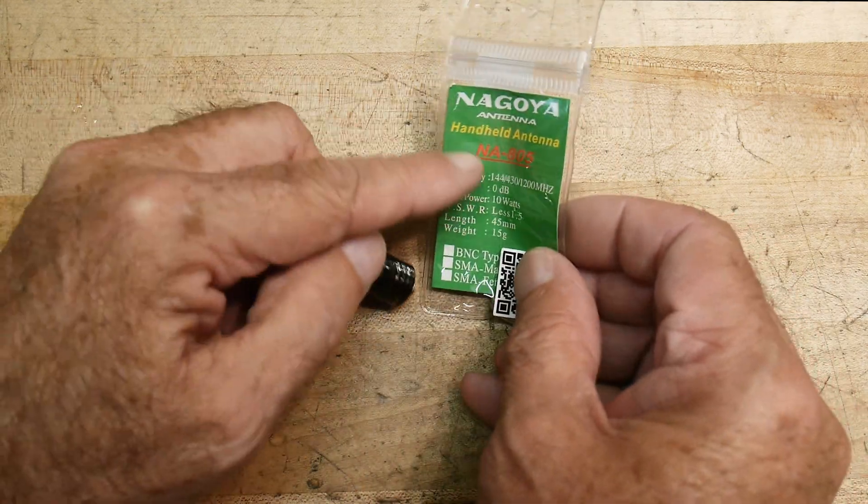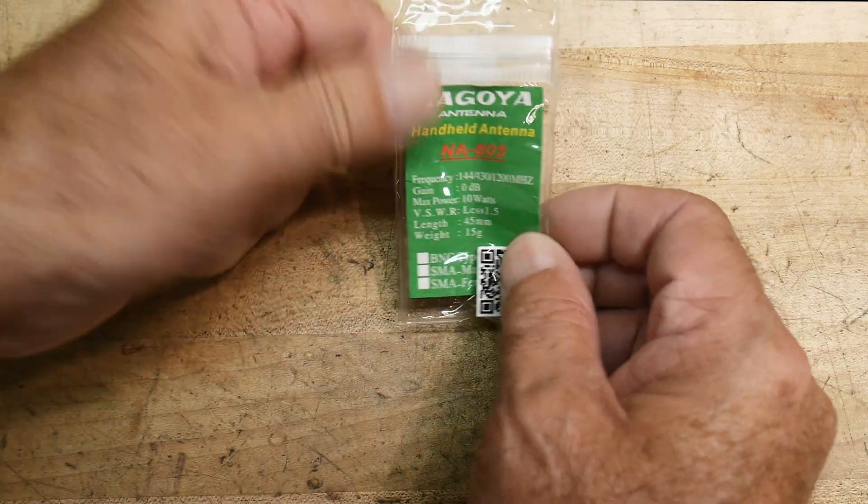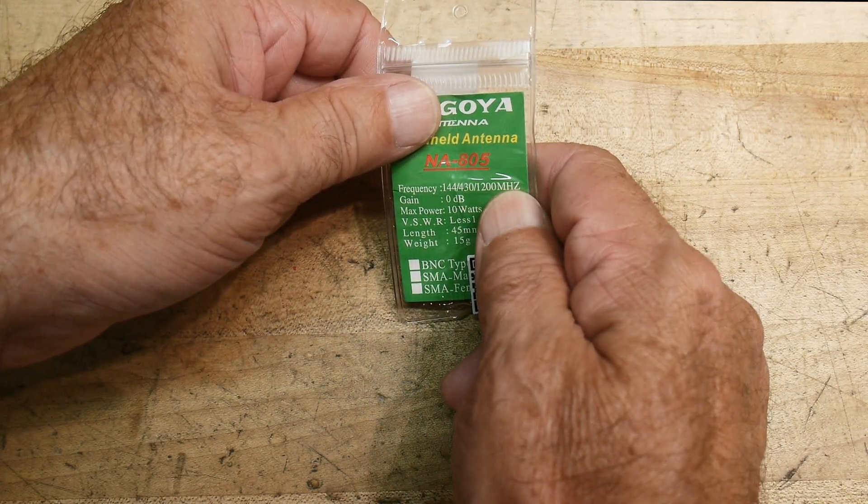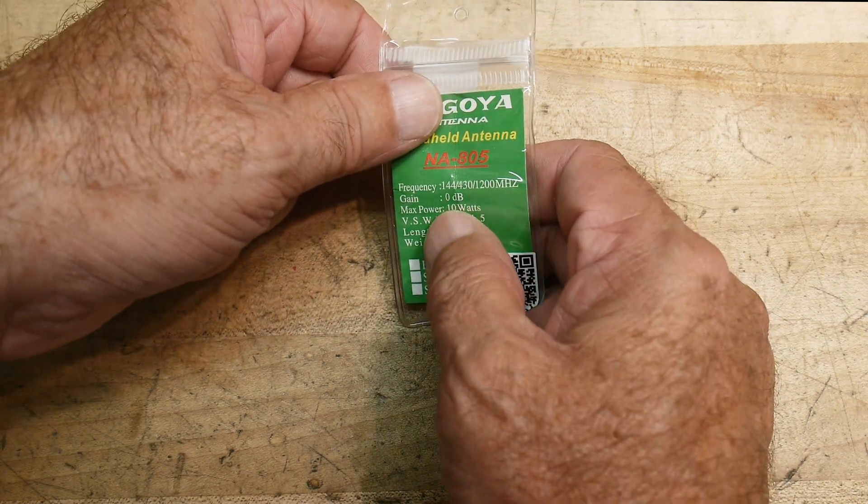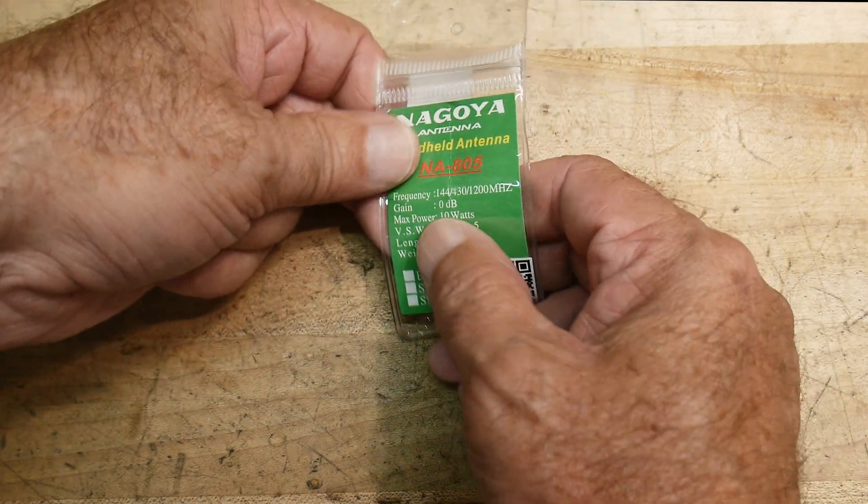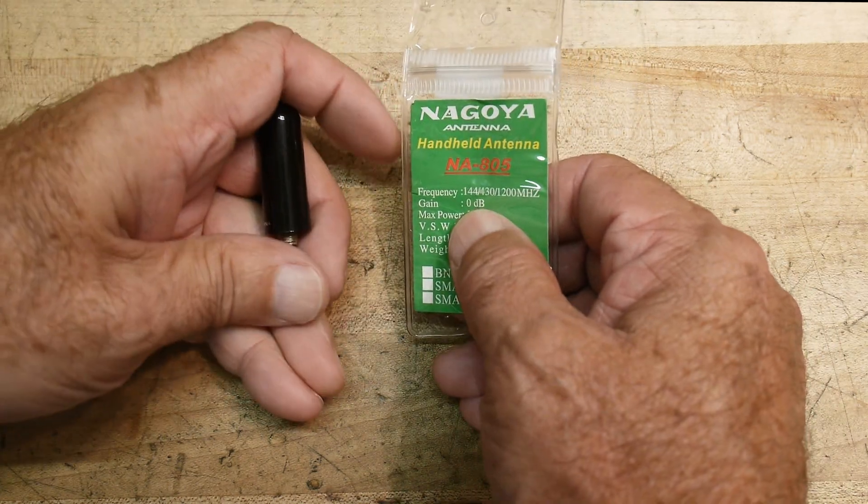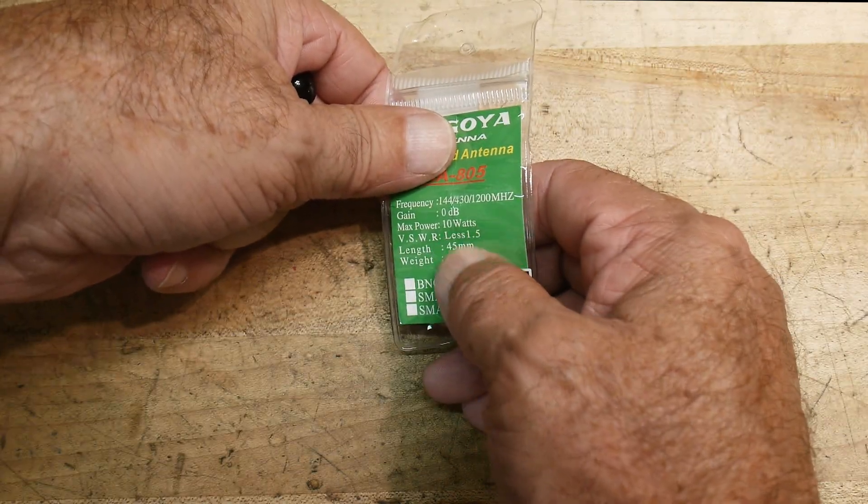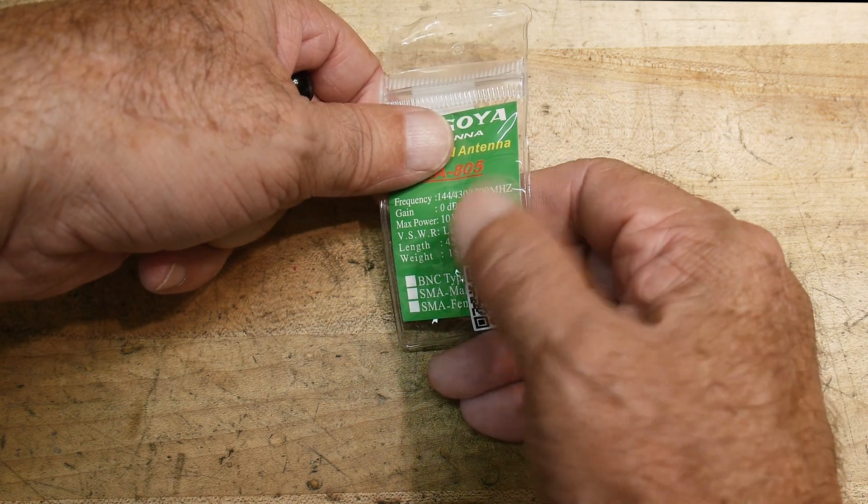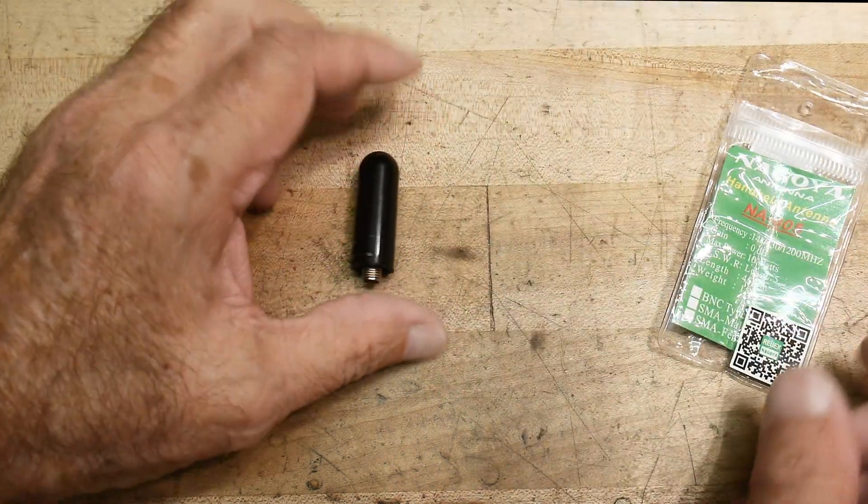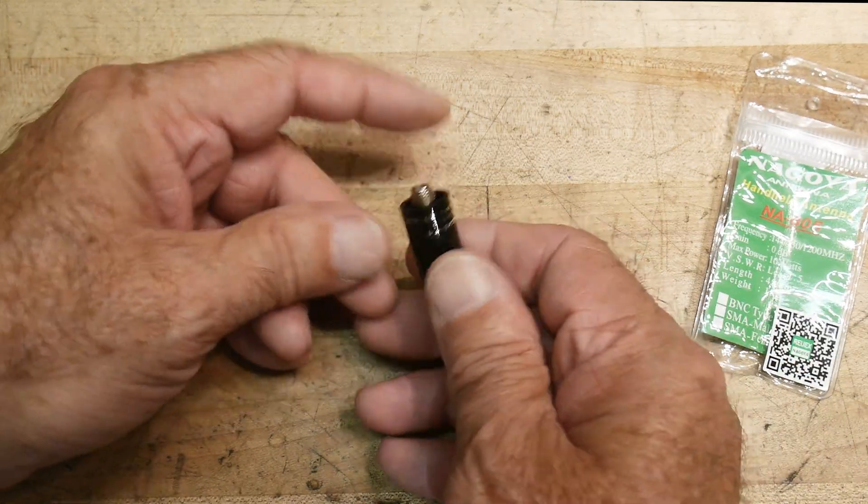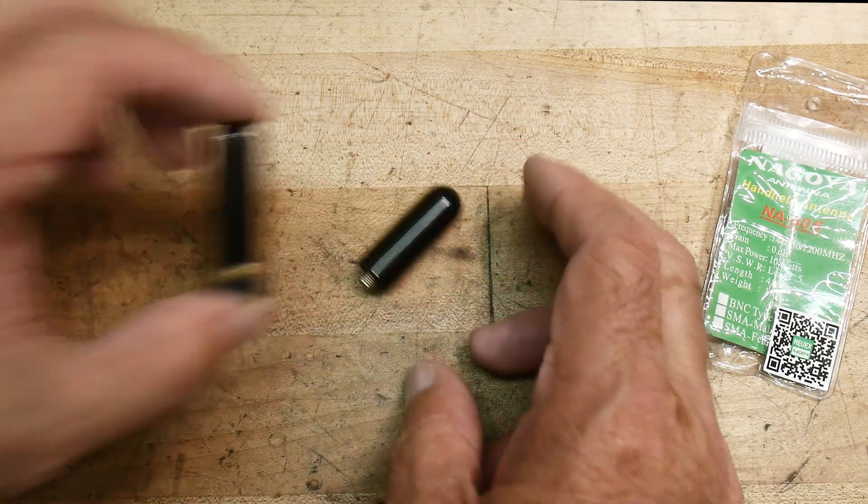This is a Nagoya NA805 and it says frequency 144, 430, 1200 megahertz, so tri-band. Gain zero dB, it's isotropic so it's zero dB over nothing I guess. Max power 10 watts, VSWR 1.5, very nice. Like I said, I'm a real sucker for these things and it's a Baofeng female connector on the end.